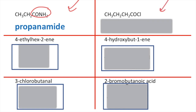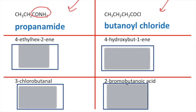This molecule is of course an acyl chloride with a four carbon chain length, so it's going to be based on butane as the stem, and therefore it's going to be butanoyl chloride. Now it's time to draw the compounds from their names.